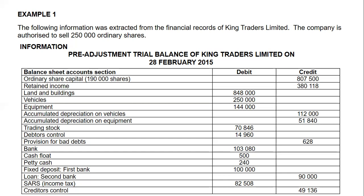Pay attention to your retained income — it shows 380,118, which could be an opening balance, especially if we have not yet prepared the income statement, meaning profits for the current year have not been transferred yet. You will always be guided by your adjustments. Similarly, accumulated depreciation on vehicles and equipment will be opening balances unless an adjustment says depreciation has already been recorded. Everything else will be a closing balance unless told otherwise.